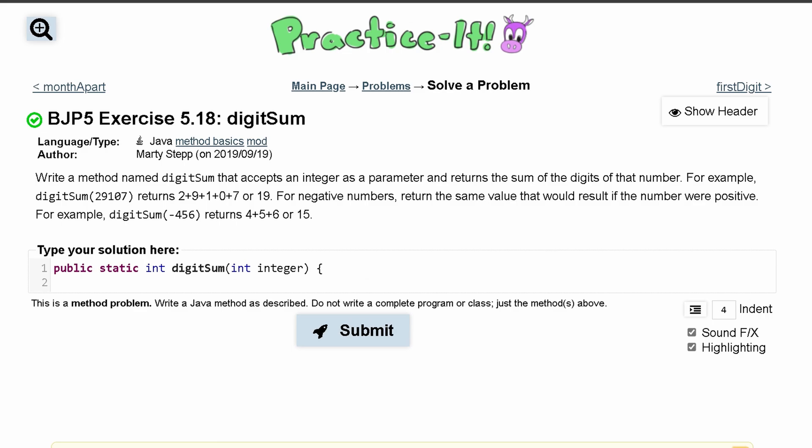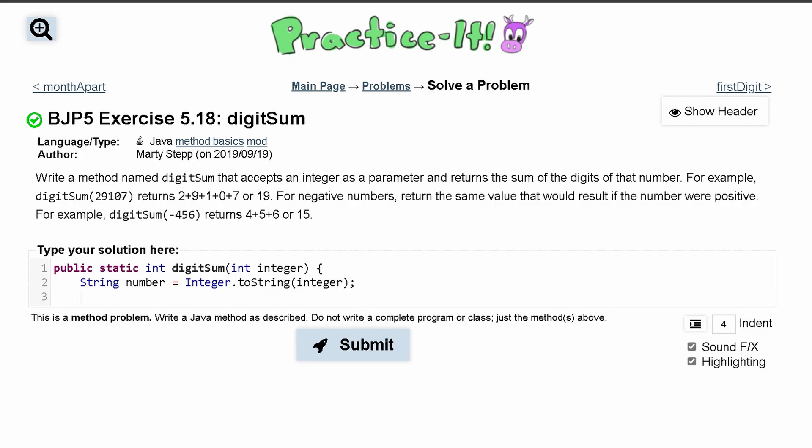The first thing I'm going to do - I'm sure there's many ways to do this - but the way I'm doing it is we have this integer and it's going to be passed in like this long string, so we can treat it like a string. We'll do String and we'll call this number. We're going to set it equal to Integer.toString, and then we have our integer right here, and we're going to end this line. So this is our integer stored as a string.